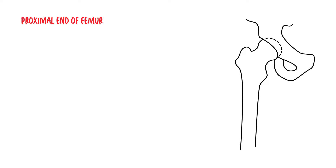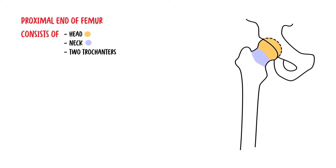The proximal end of the femur, also known as the superior end, consists of the head, neck, and two trochanters — the greater trochanter and the lesser trochanter.